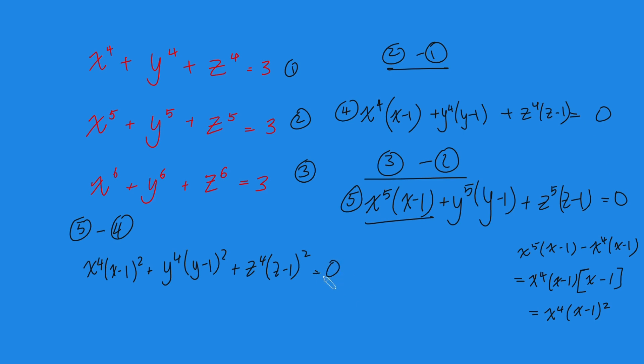Okie dokie. Now, maybe you can spot what happens here. This term here is non-negative, because x^4 is non-negative, and so is (x - 1)^2. So, this is at least 0. Same thing here, this is at least 0. And same thing here, this is at least 0. However, I'm adding up three non-negative terms, and the answer here is 0. How is this possible? Well, the only way this is possible is if each of them is 0.